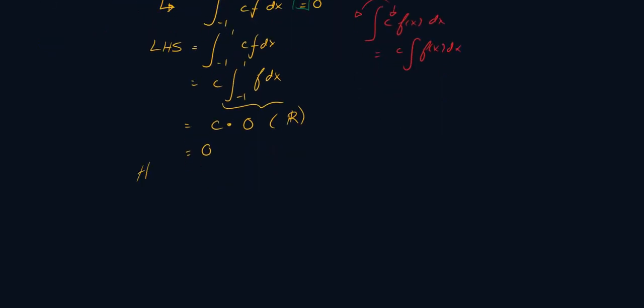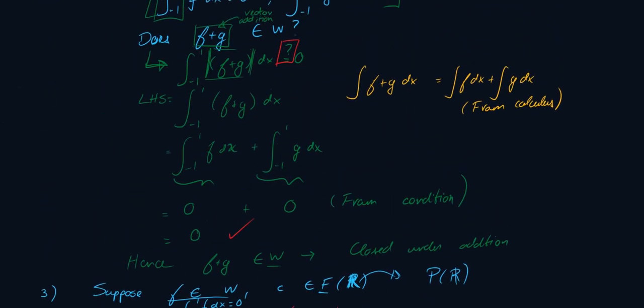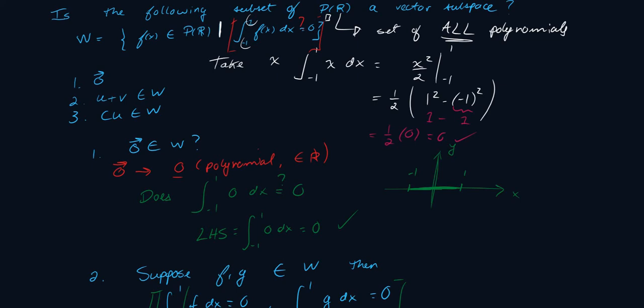We've shown that the integral from minus 1 to 1 of c·f dx equals 0. Hence cf belongs to W, and W is closed under scalar multiplication. Because we proved all three conditions — the zero vector belongs to W, closure under addition, and closure under scalar multiplication — W is in fact a subspace.